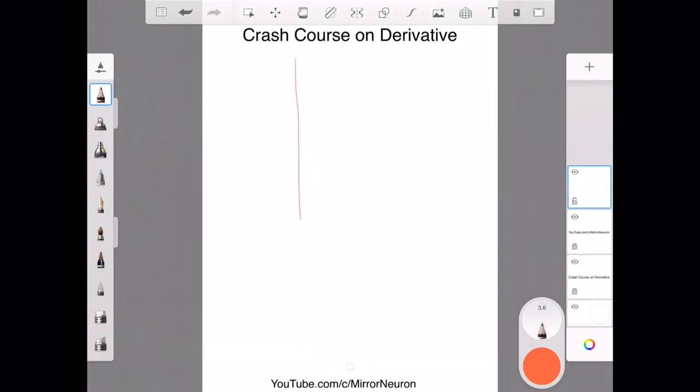For example, I have a function like this, and this is my x and this is my y. I want to know the slope of my point here, say for example, this is in location x.